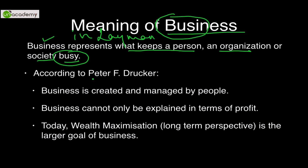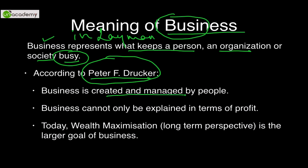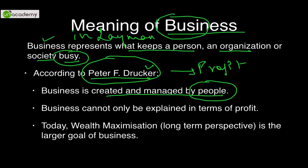In a professional term, as per the management guru Peter F. Drucker, he defines business in a much broader connotation. The first component of business is that it is created and managed by people. What we normally attach to business — that is profit — is not the primary objective as per Peter F. Drucker. According to him, the first and most important component is people, and business cannot only be explained in terms of profit. It is much broader.